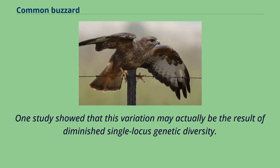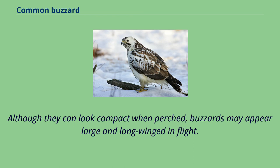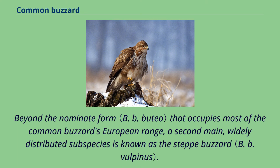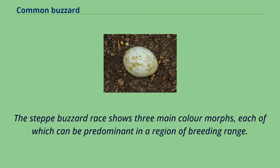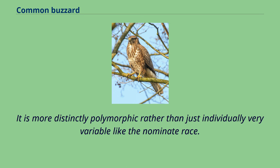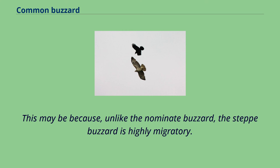One study showed that this plumage variation may actually be the result of diminished single-locus genetic diversity. Beyond the nominate form that occupies most of the common buzzard's European range, a second main widely distributed subspecies is known as the steppe buzzard. The steppe buzzard race shows three main color morphs, each of which can be predominant in a region of its breeding range. It is more distinctly polymorphic rather than just individually very variable like the nominate race. This may be because, unlike the nominate buzzard, the steppe buzzard is highly migratory, and polymorphism has been linked with migratory behavior.